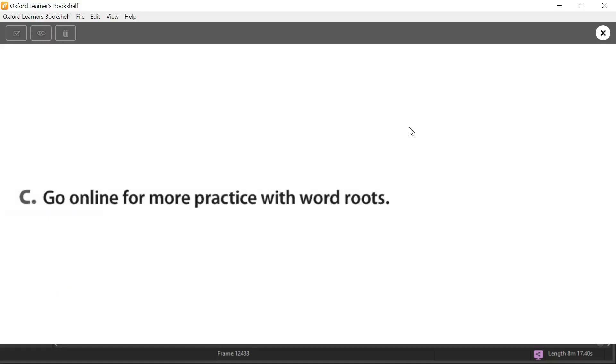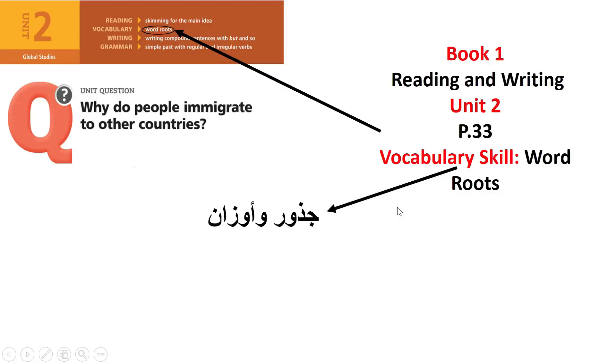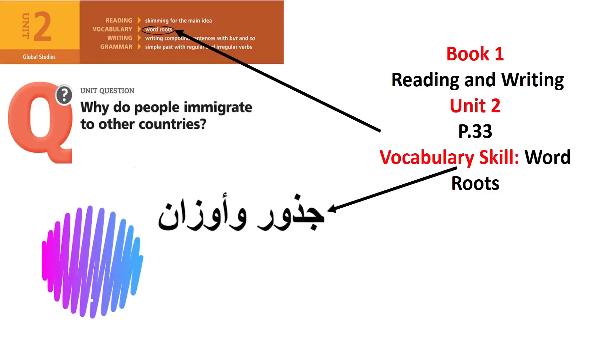After this, please go online and practice on your LMS. Online practice using and finding out different word roots and hopefully you will increase in your understanding of word roots in this vocabulary skill. So to conclude, today we have studied the word roots from your Book 1 Reading and Writing Unit 2 page 33. Jidhurun wa'alzaan. Thank you very much for listening today.